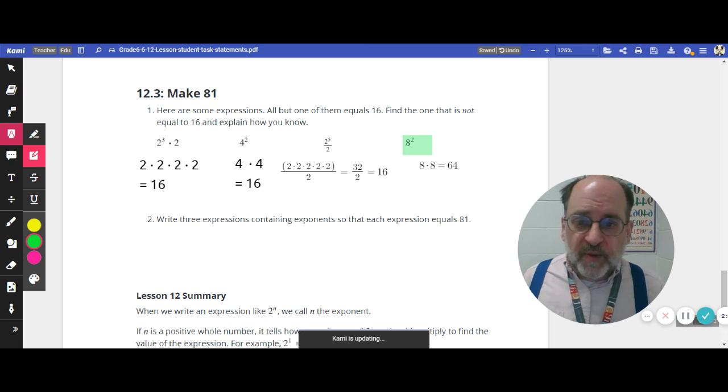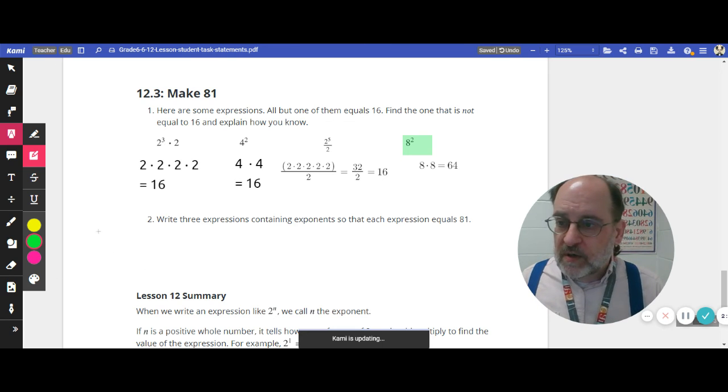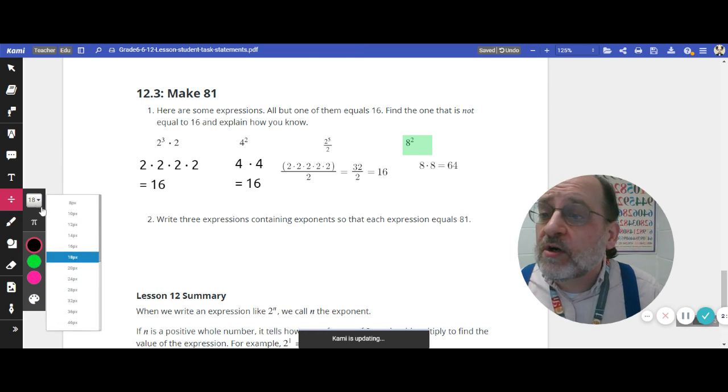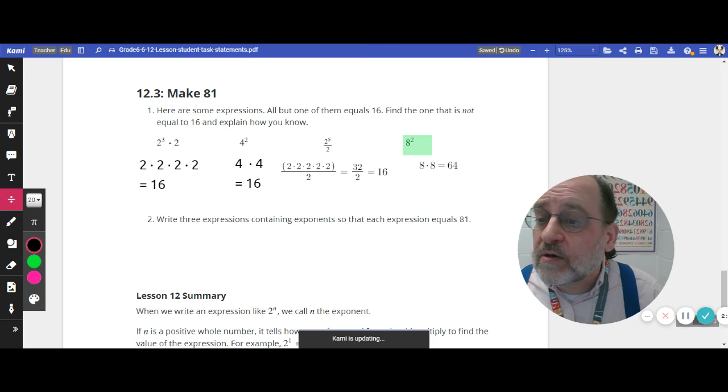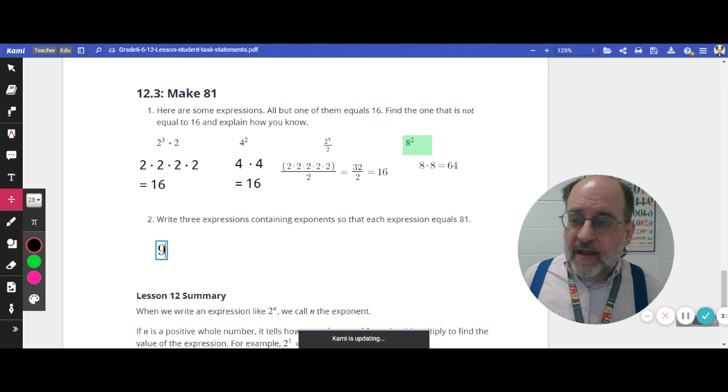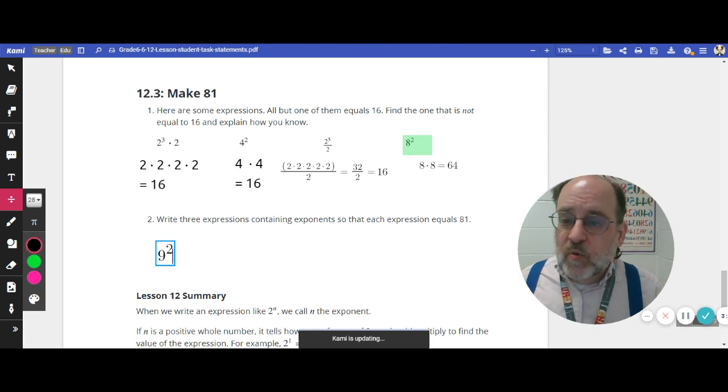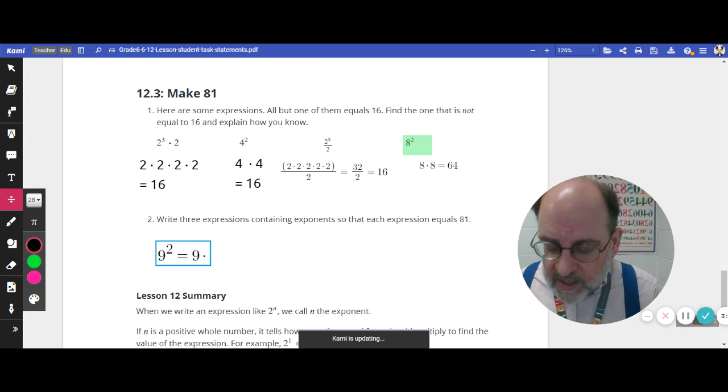Now, down below it says write 3 expressions containing exponents so that each expression equals 81. I'm going to do one of these. You got to do two. But here's one that I can write down. I can write down 9 and then let's do that squared. 9 squared because I think 9 times 9. And that's equal to 81.